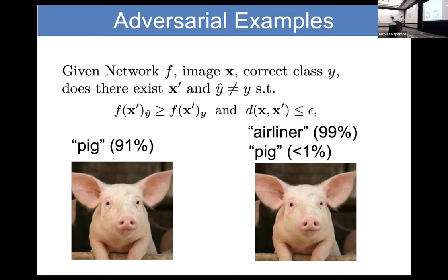As we've discussed today, these adversarial examples exist for basically whatever architecture we're using, which is obviously not ideal. I don't think it's realistic that we can get rid of all of them, but it's still interesting to evaluate how robust they are — we're never going to get the perfect model, but we might get a slightly more robust one.